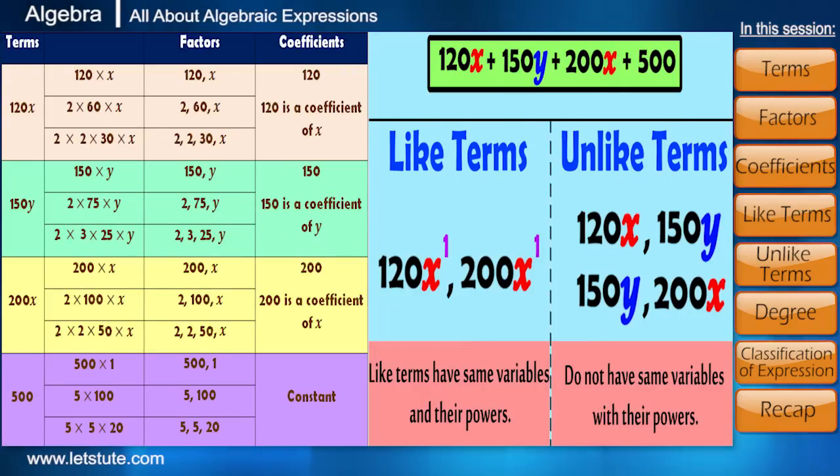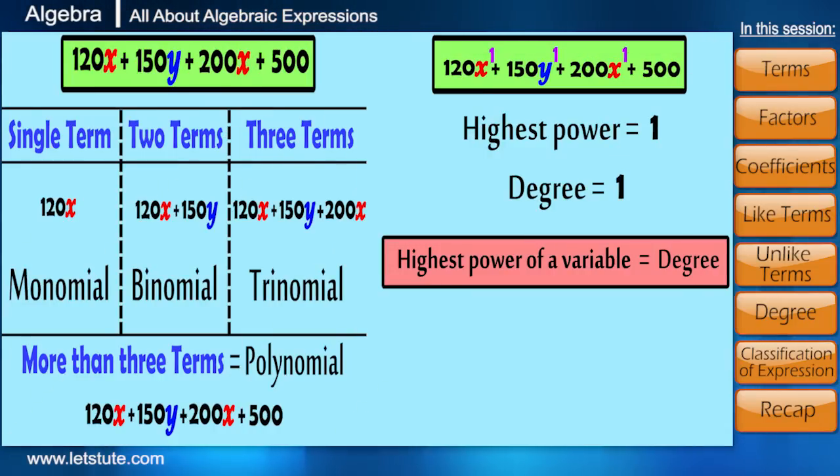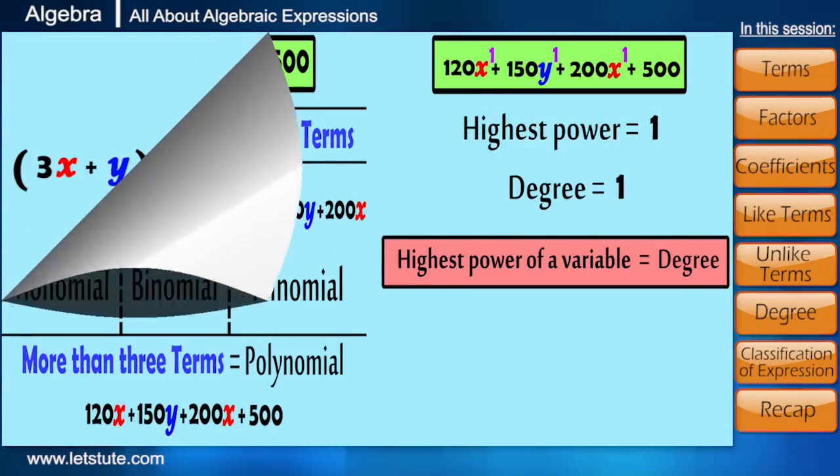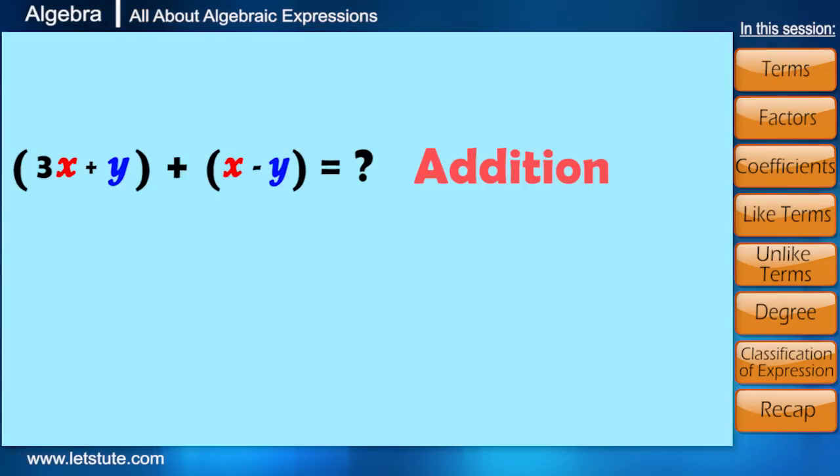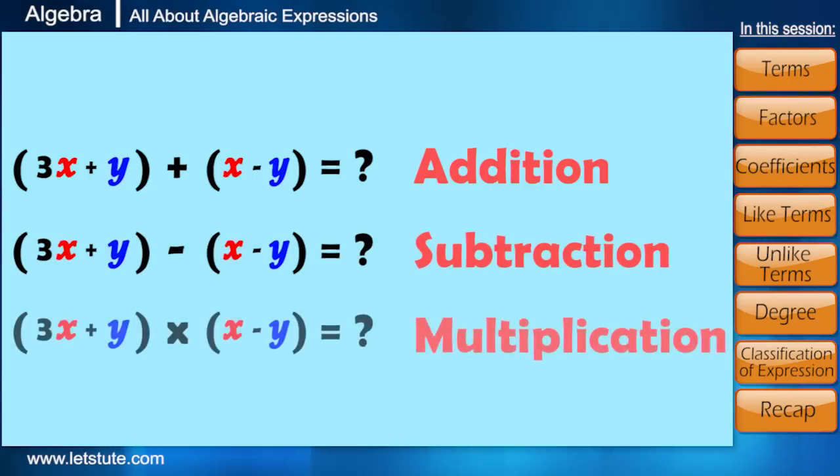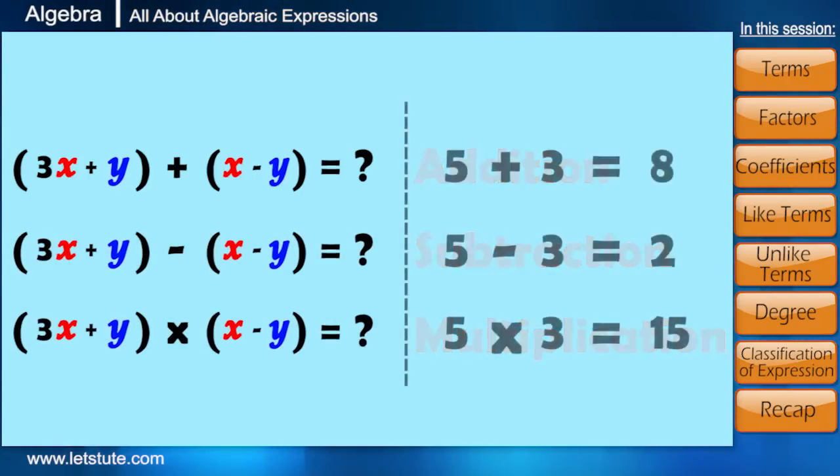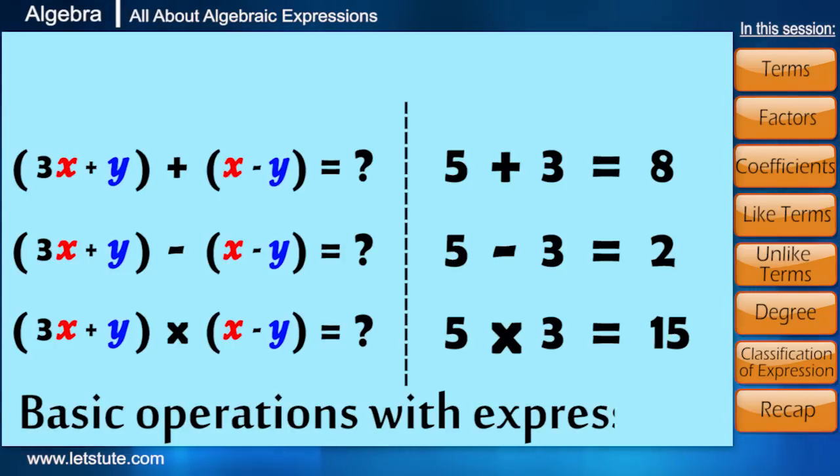So, having understood algebraic expression well and different notions involved, now I'm curious to know what if we can add two algebraic expressions together or if we can subtract and multiply them, just like we do with numbers. Because in algebraic expression, along with the numbers, variables are also used. So how to do basic operations with expressions? We are going to learn these things in our upcoming sessions.